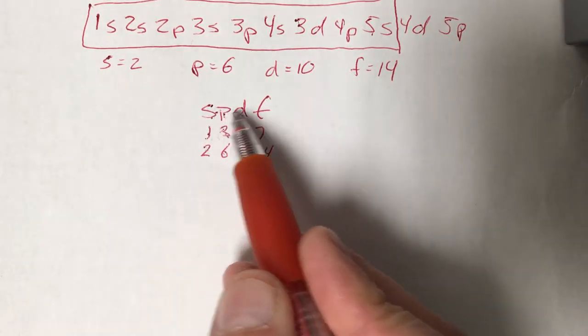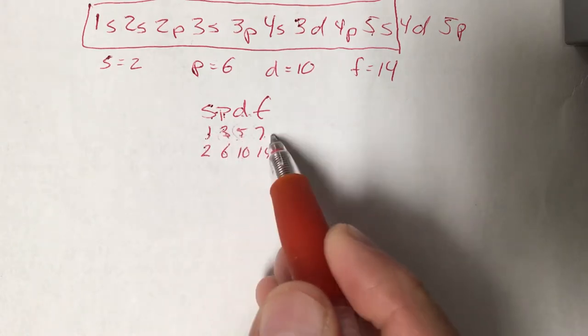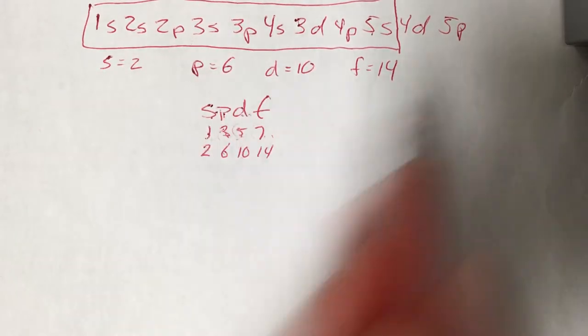So again, it's just down to s, p, d, f, knowing those in order. Then your odd numbers 1, 3, 5, 7, and then double them. That's where all those limits come from.